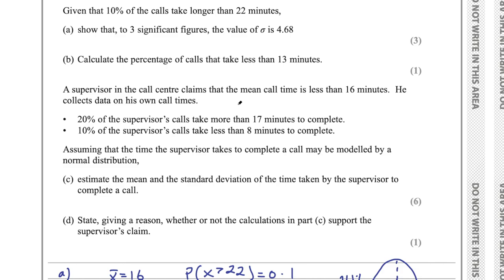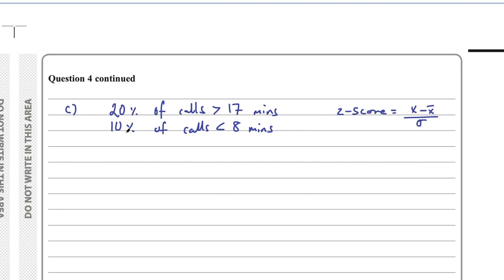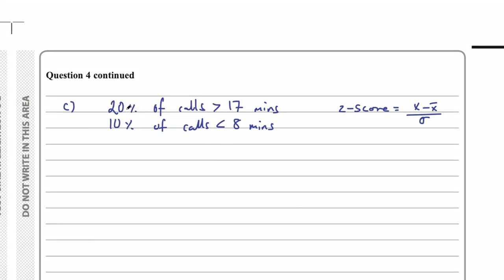Part C says the supervisor claims the mean call time is less than 16 minutes. He collects data on his own call times: 20% take more than 17 minutes and 10% take less than 8 minutes. Assuming a normal distribution, estimate the mean and standard deviation of the supervisor's call times. This is essentially a simultaneous equations question — we'll create two equations to solve for the mean and standard deviation.